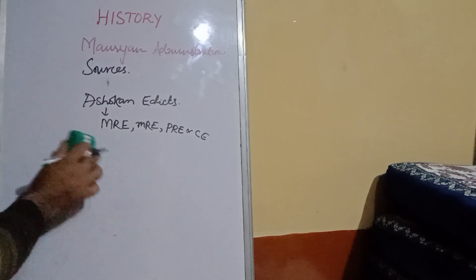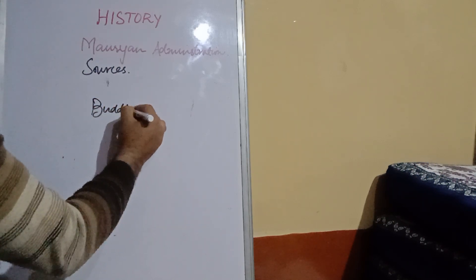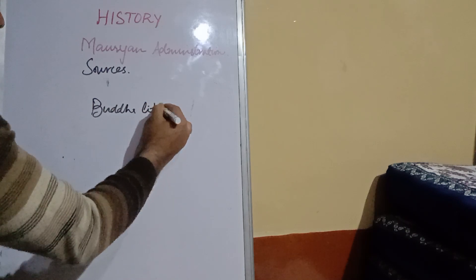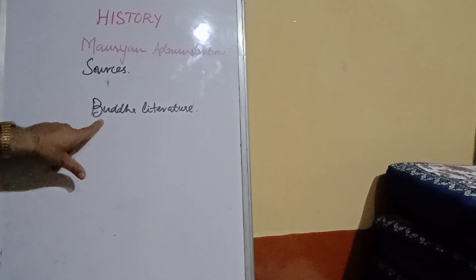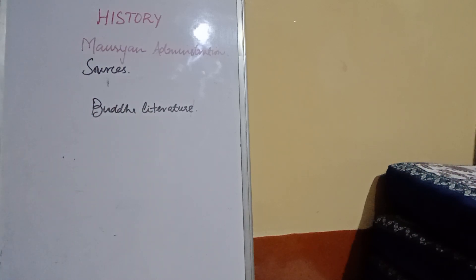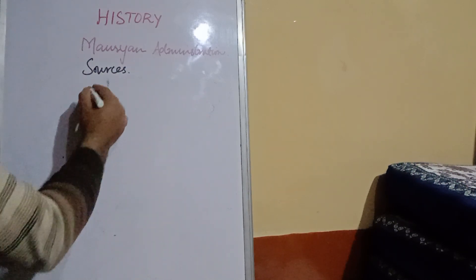Number four would be Buddhist literature. All books and literature of Buddhism give some sort of information about this Mauryan administration. The Mauryan ruler Ashoka was particularly a follower of the Buddhist religion. Number last was that of currency — what currency they had.